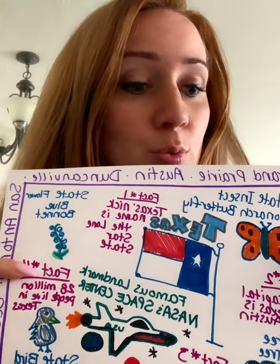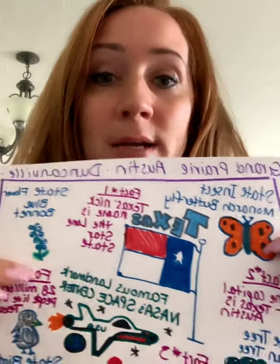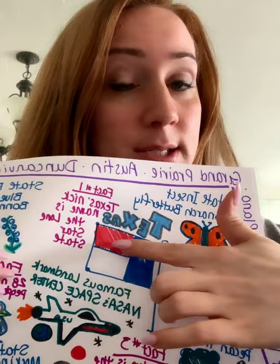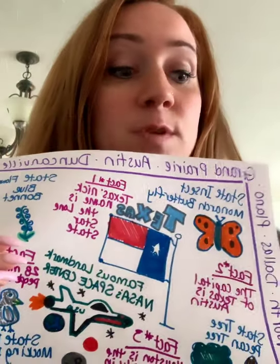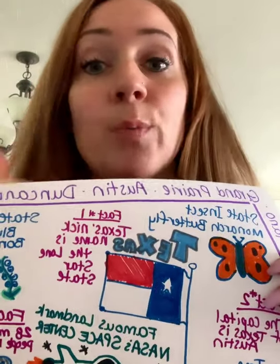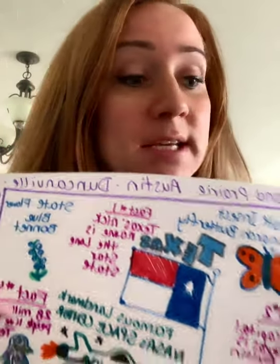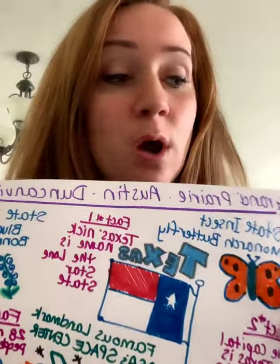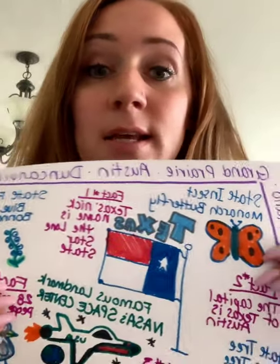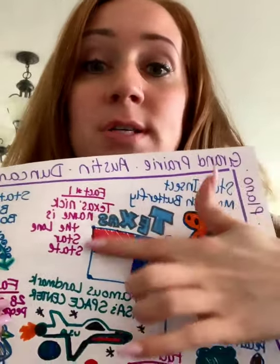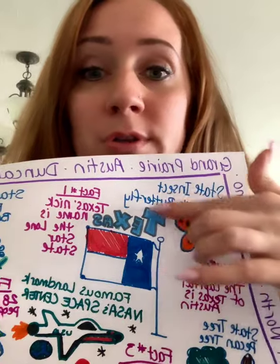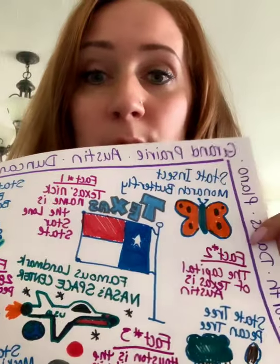Step number three: you add a title. My title is Texas, but I gave you some title ideas you can use, or you can come up with your own — I love Texas, Texas rocks, Texas facts, anything like that. But your title has to be a little bit bigger and bolder than all the other words on your page.